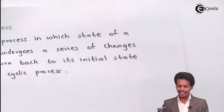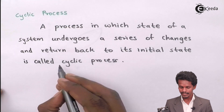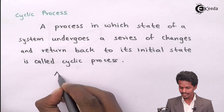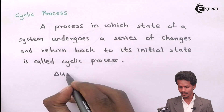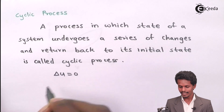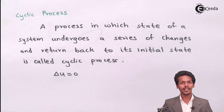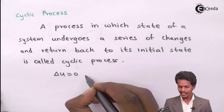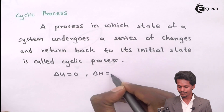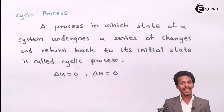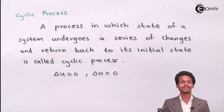For a cyclic process, there are a few conditions we should know. Delta U, the change in internal energy, will be zero. Along with that, the change in enthalpy will also be zero. This is basically the cyclic process.